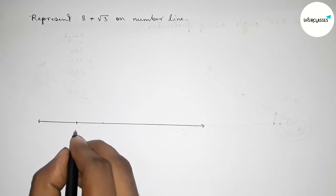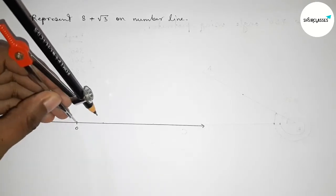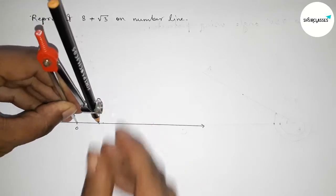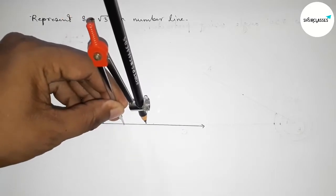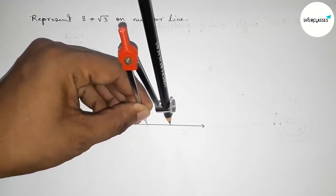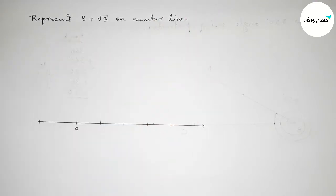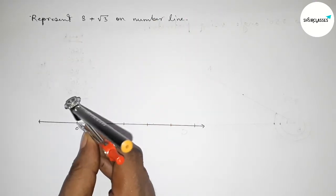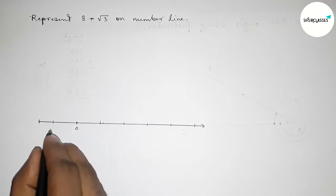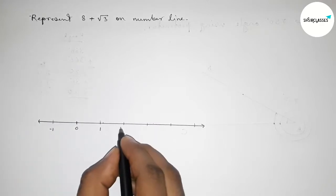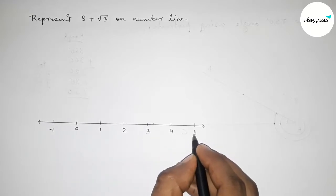Now taking point zero, then using a compass set to one unit length and marking the numbers on the line. Marking points: minus one, one, two, three, four, and five.